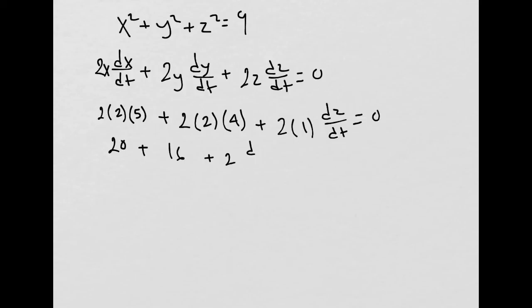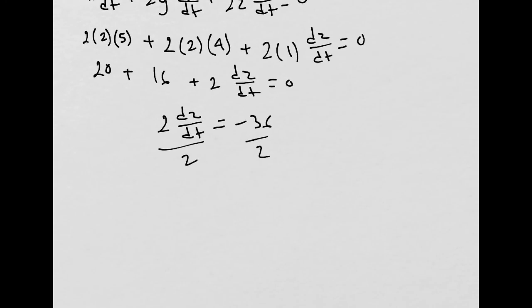Negative 18, and then 2 dz/dt equals 0. Now if we add this we get 30, we get 36. Now I'm going to subtract it, negative 18, and divide by 2, and we get dz/dt equals negative 18 and that is our answer. Thanks for watching.